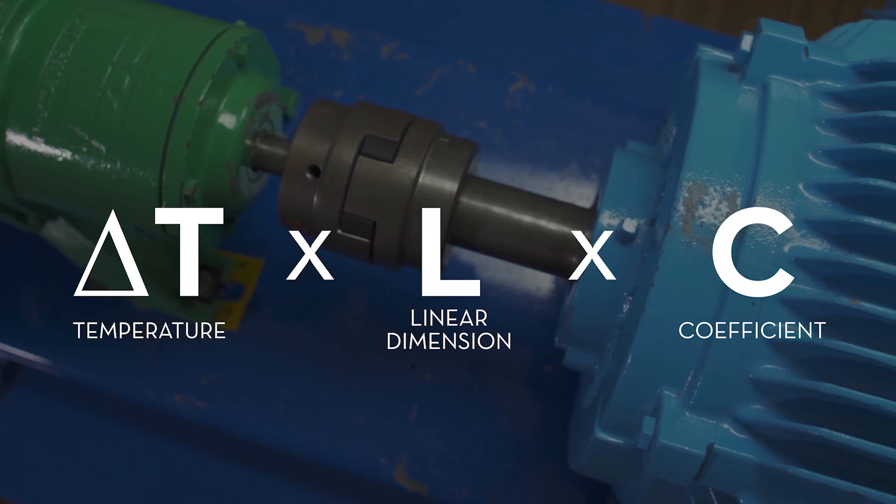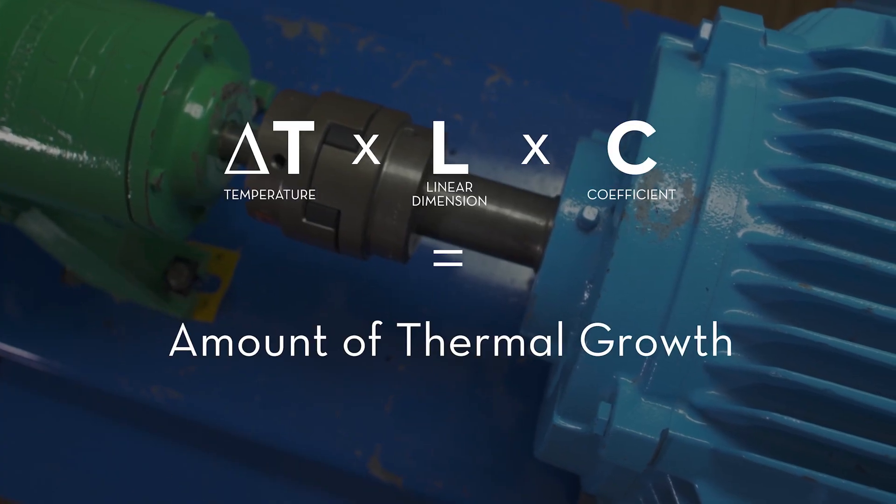Those numbers are really close, so close that at six decimal places I'm not overly concerned about complete accuracy — I just want a good estimation. I've heard people call this TLC: Temperature times Length times the Coefficient. So if we multiply those three things together, it gives us our thermal growth calculation.